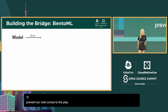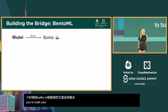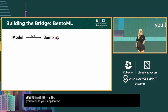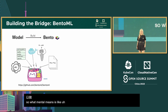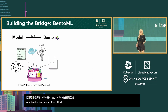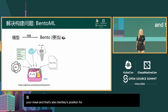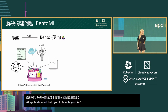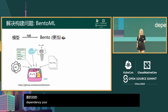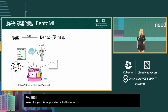BentoML is an open source Python framework that can help you build your application. A typical Bento is a traditional Asian food that contains rice, vegetables, meat — everything you need for your meal. That's also Bento's role for your AI application: it bundles your API, your dependency, your model, and every other file you need into one deployable unit — a Bento.